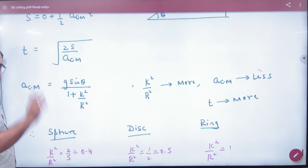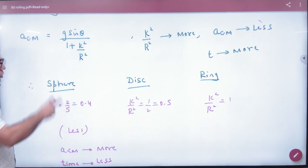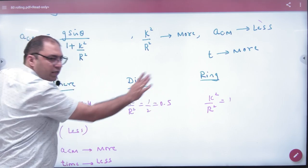Now, the acceleration formula. Remember to write the three bodies' k²/R². k²/R² for sphere is 2/5 which is 0.4. Disc is half which is 0.5, and ring value is 1.